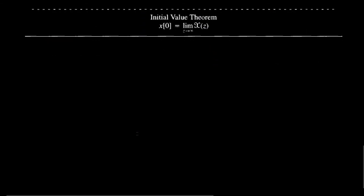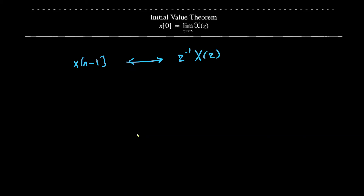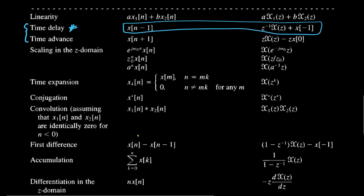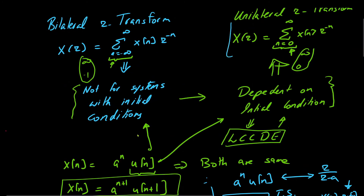The time delay property states that if x[n] has a z-transform X(z), then x[n-1] has a z-transform of z⁻¹·X(z) + x[-1]. Note that x[-1] is an auxiliary condition or initial condition. To prove this, let us denote x[n-1] as y[n] and take the unilateral z-transform: Y(z) = summation from n=0 to infinity of y[n] z^(-n).